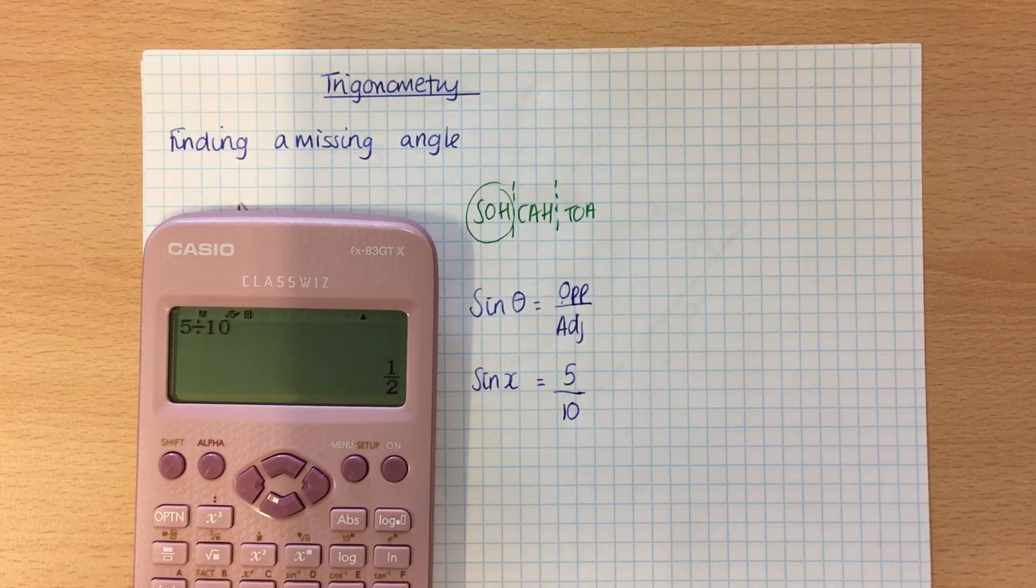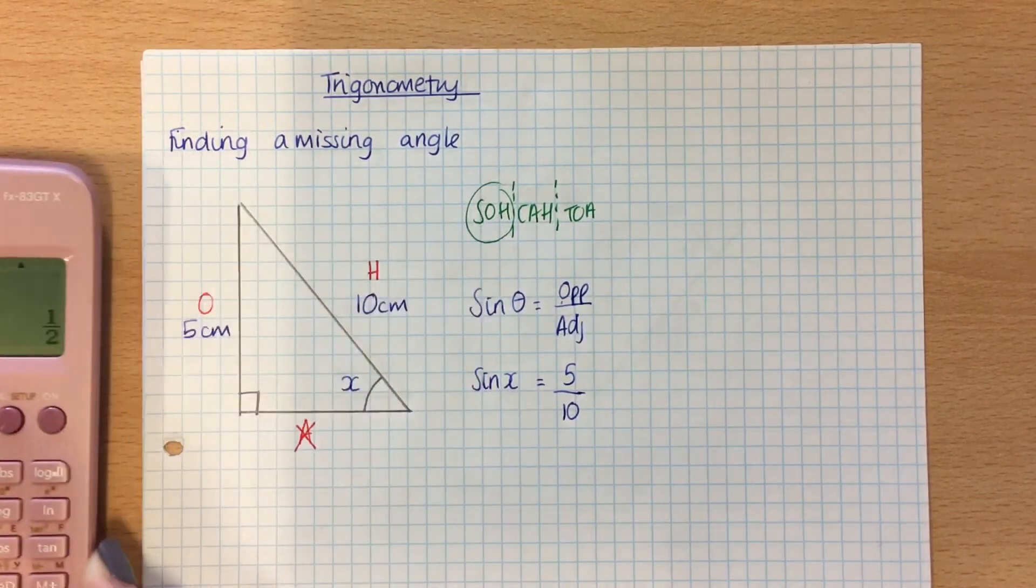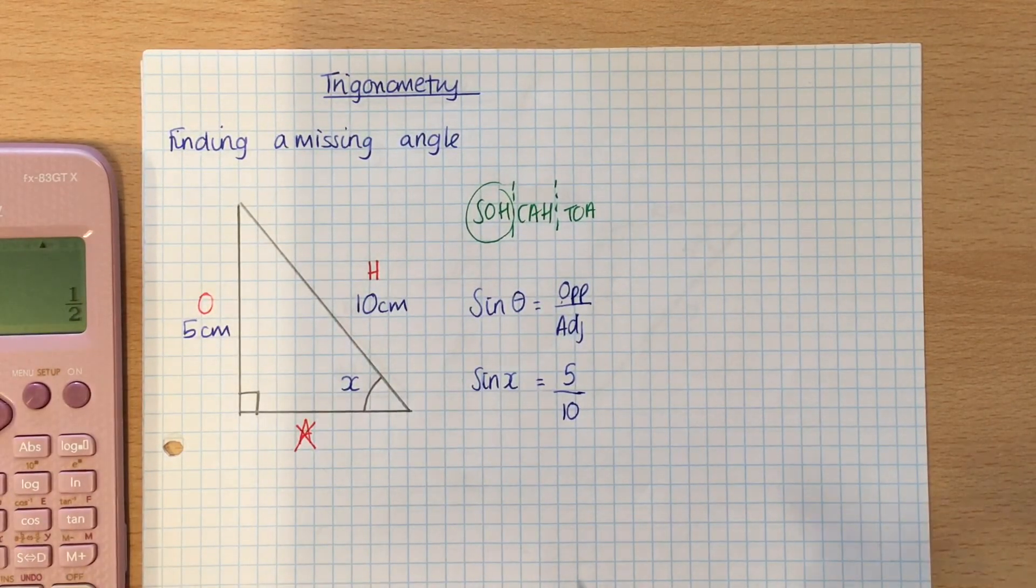Now, that isn't telling me the size of the angle, and what I said to you in my last video was that you had to do the inverse of sine to get it on its own, because that's what we do, isn't it, when we need to rearrange something, we do the opposite to get rid of it.